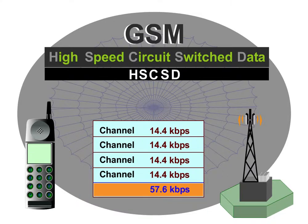As most of the services used require higher data rates in the downlink than in the uplink, HSCSD uses an asymmetrical implementation — that means three time slots in the downlink and one in the uplink. This also facilitates mobile station design and avoids battery capacity problems.